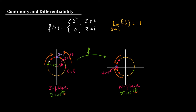Now, if I consider a completely different point, its image will land somewhere else on the w-plane circle. In fact, if you pick any point on the circumference of the circle in the z-plane, apart from z = i, its image will be a point on the corresponding circle in the w-plane.